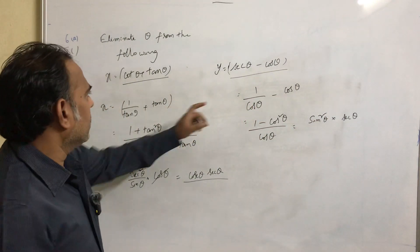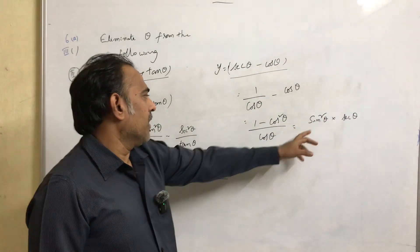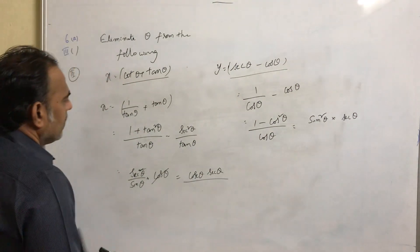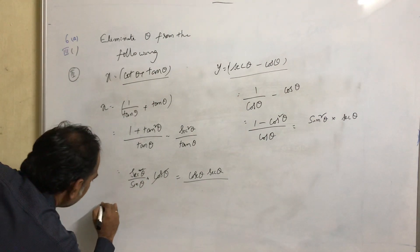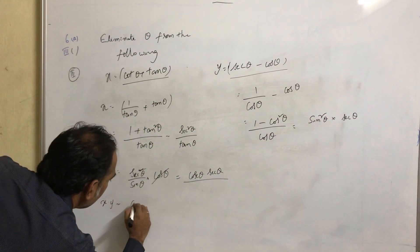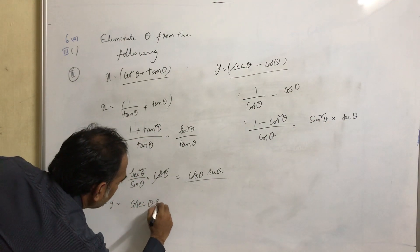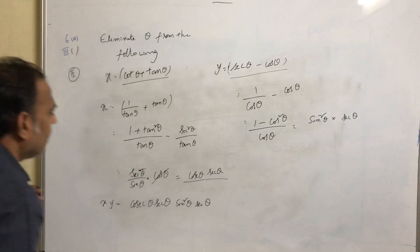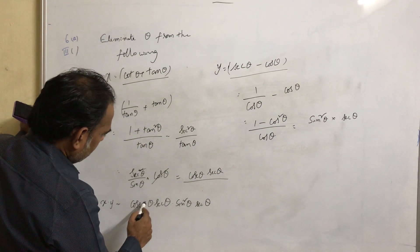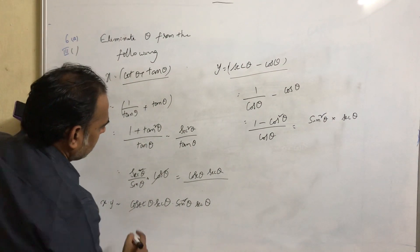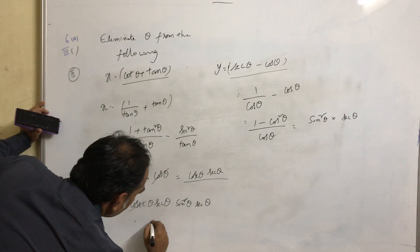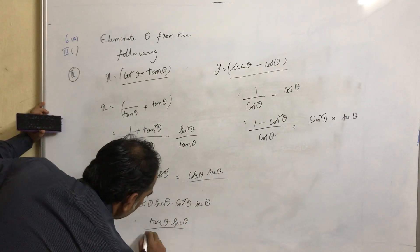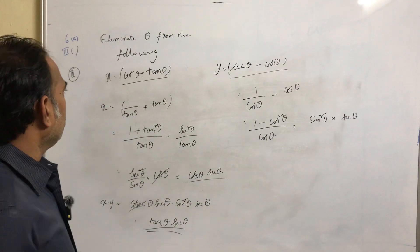If you look at x and y, you see cosecant in x and sine squared in y. If we perform x into y, the cosecant and sin squared will interact. So x into y equals cosecant theta into secant theta into sin squared theta into secant theta. This simplifies to tan theta into secant theta. So x times y equals tan theta into secant theta.